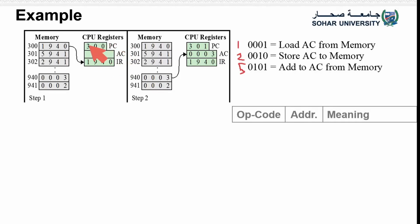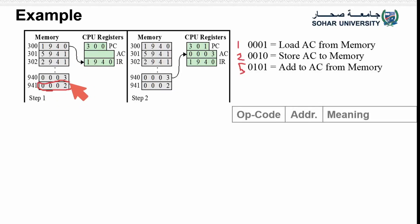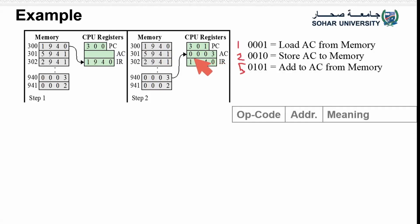When the program counter finishes address 300, it moves to address 301. Address 301 contains operation code 5, which corresponds to ADD — add to the accumulator from memory. The address used in this instruction tells us what value to add to the accumulator.